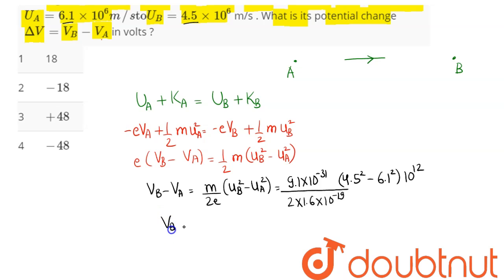Hence this potential difference, Vb - Va, comes out to be -48.23 volts. So the nearest answer here is -48 volts. Hence we can say option number 4 is the correct answer.